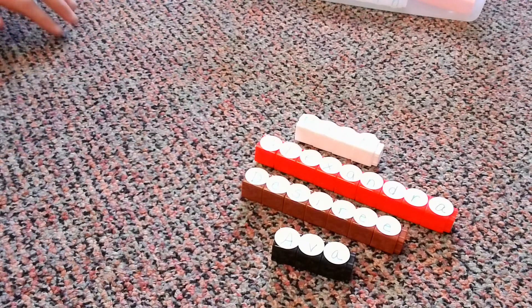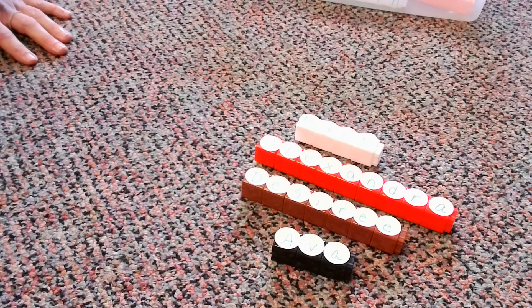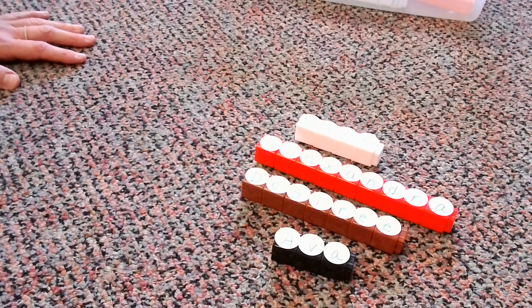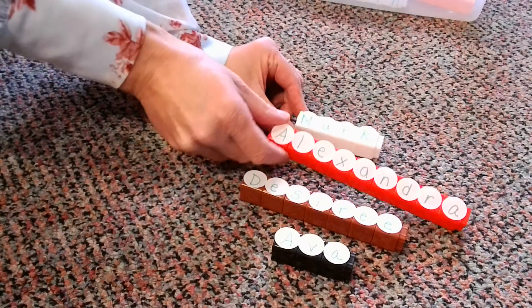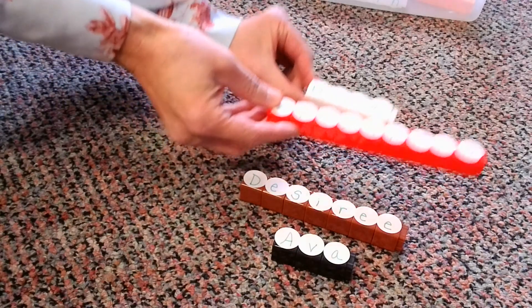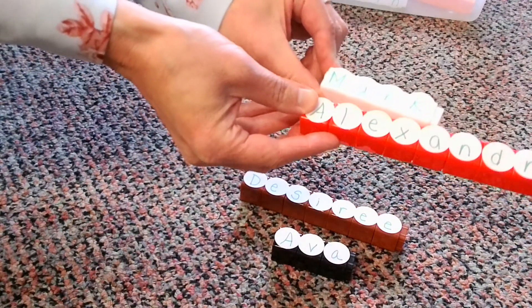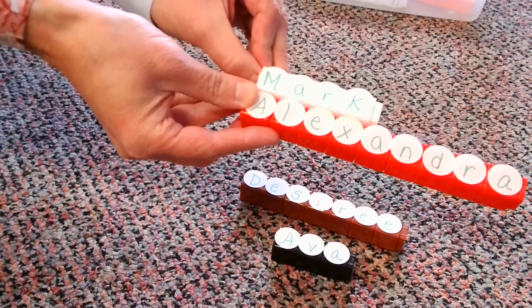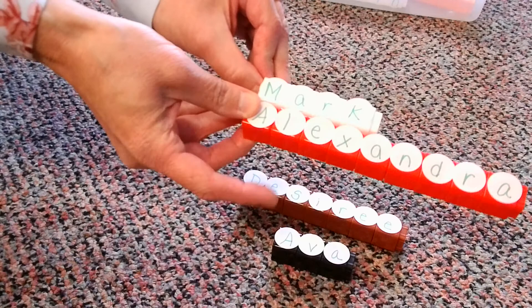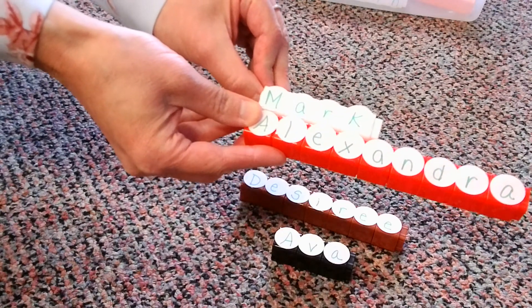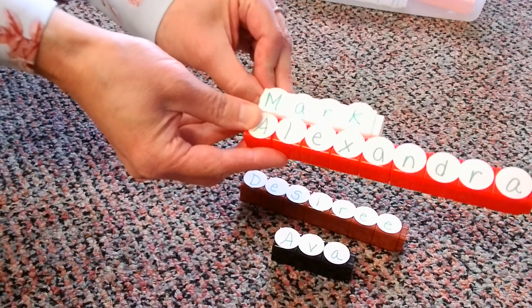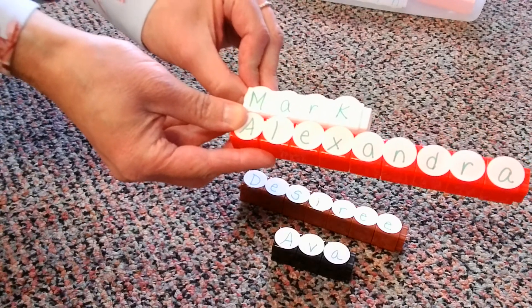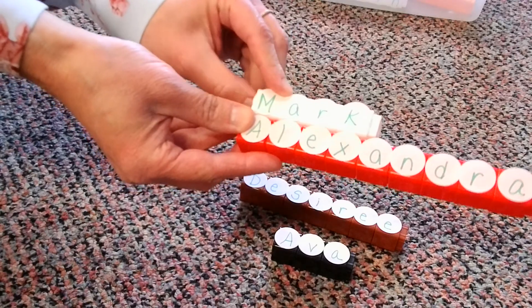So what we're going to do, we're going to compare them. And we're going to see who's longer, who's shorter. So let's compare Mark and Alexandra. If I'm comparing Mark to Alexandra, obviously, who's longer? Definitely, Alexandra. Mark is shorter. If you look at Alexandra, she has way more red cubes than Mark has white cubes.